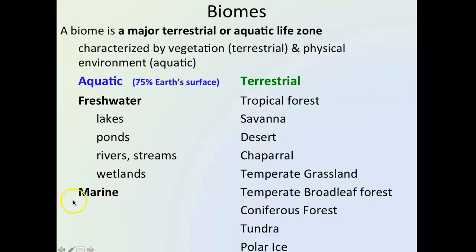Marine is the largest component of that 75%. On land, there are terrestrial biomes: tropical forest, savanna, desert, chaparral, temperate grassland, temperate broadleaf forest, coniferous forest — coniferous means cone-bearing trees like pine trees — the tundra, and the polar ice caps. This chapter will move through each one of these, and you'll want to recognize the different characteristics of each biome.